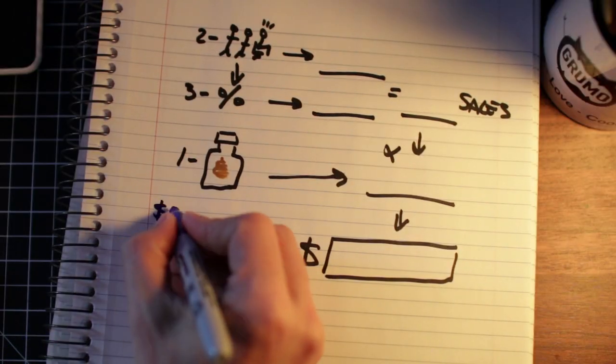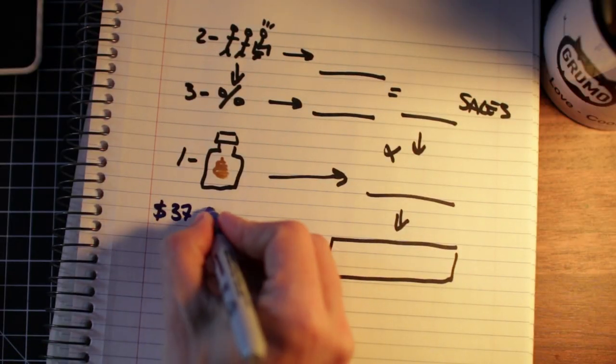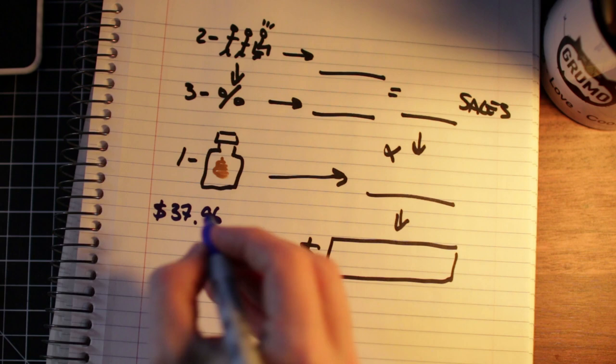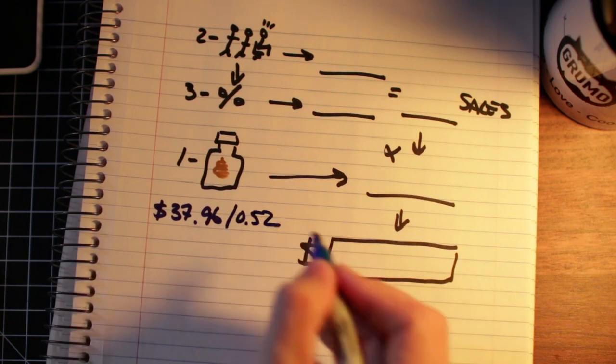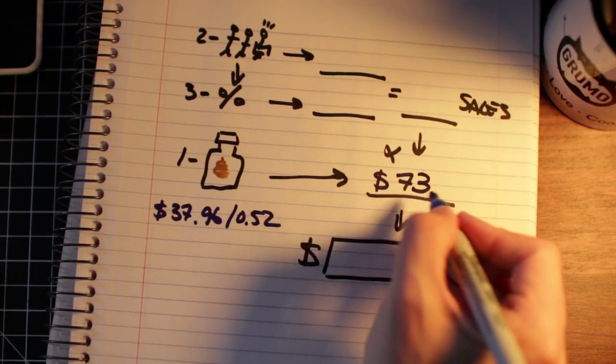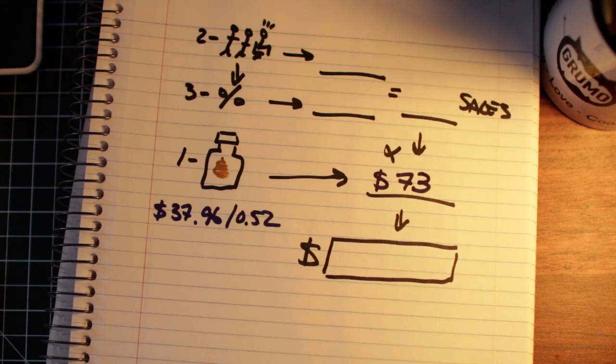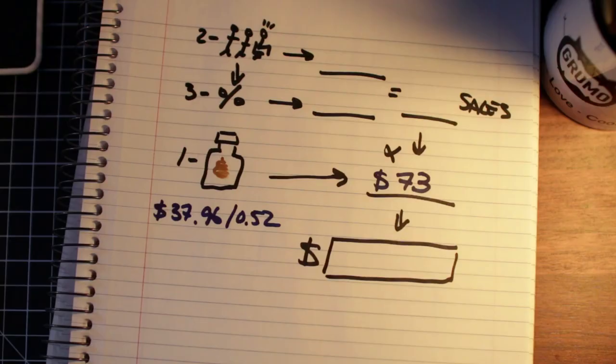So to get the total value of each sale, we just divide the affiliate take by the commission rate, and we get that the average customer spends just over $73 to unclog their ass. I mean, I would also pay $73 to get my arse unplugged, so no judgment there. Okay, that takes care of the first number.